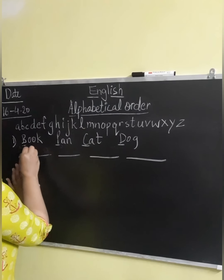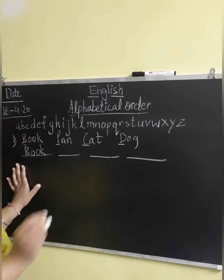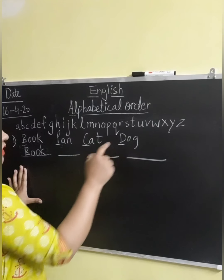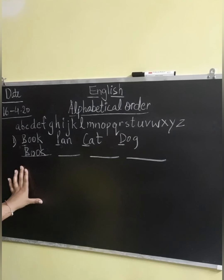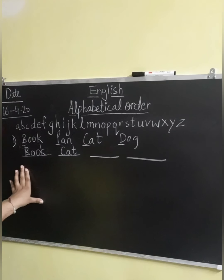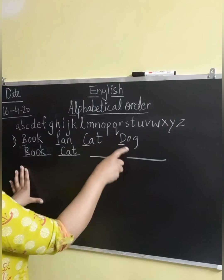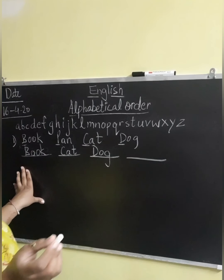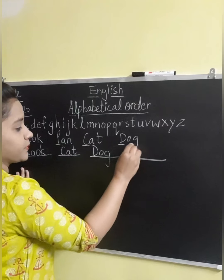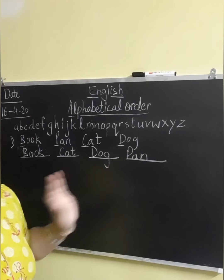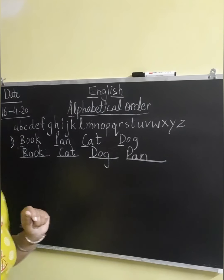Now the second word: we are left with P, C, D. After B, which letter is coming? Yes, it's C. So we are going to write cat here. Now after C, which letter is coming in the alphabet? D. So D is here — yes, dog. We are going to write dog in the third number. Now the fourth and last, we are left with PAM. So class, now we are able to arrange them in the correct alphabetical order.